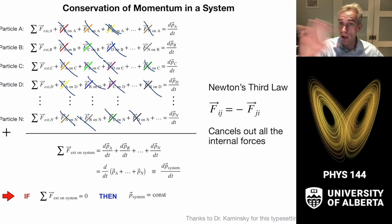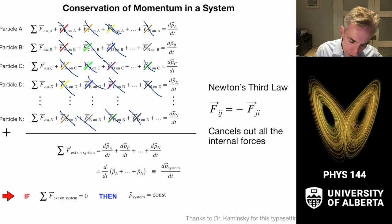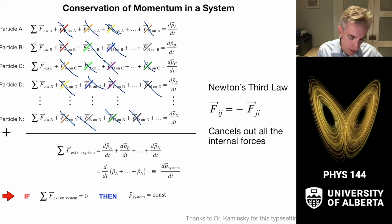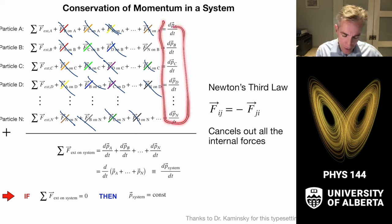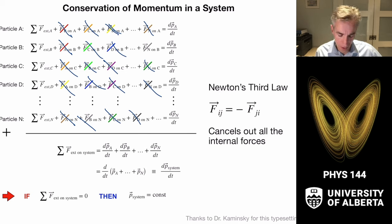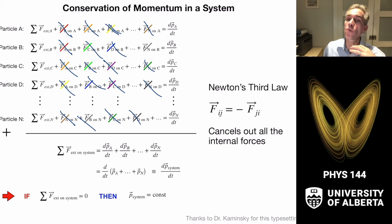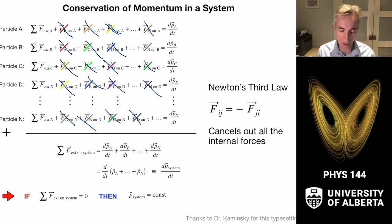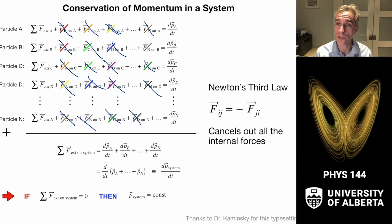All internal forces cancel — it's a complete Newton's third law cancellation. What remains is only the external forces. The sum of all external forces equals the total change in momentum of the entire system. If the external forces are zero, the total momentum of the system is constant. This holds for any number of bodies — even Avogadro's number worth of particles.